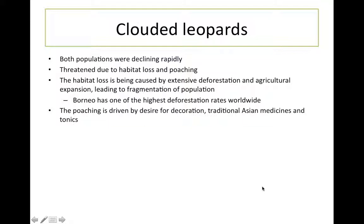Both populations were declining rapidly. They were threatened due to habitat loss and poaching, and the habitat loss is being caused by extensive deforestation and agriculture expansion, leading to fragmentation of the population, which we know is bad because it can lead to severe genetic bottlenecks. Borneo has one of the highest deforestation rates worldwide, and the poaching is driven by a desire for decoration, traditional Asian medicines, and tonics.